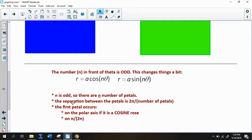So if you have the n, the value in front of the theta is odd. It changes things just a little bit. The first thing that it changes is that there are only n petals, meaning if there's a 3 here, then there will be 3 petals. If there's a 7 here, there'll be 7 petals. If there's an 8, though, there'll be 16, so it doubles. The length of the petal is the same, so that doesn't change. And the separation between the petals is still 2pi divided by the number of petals. I said that before. I hadn't actually written it down, but here it is here.